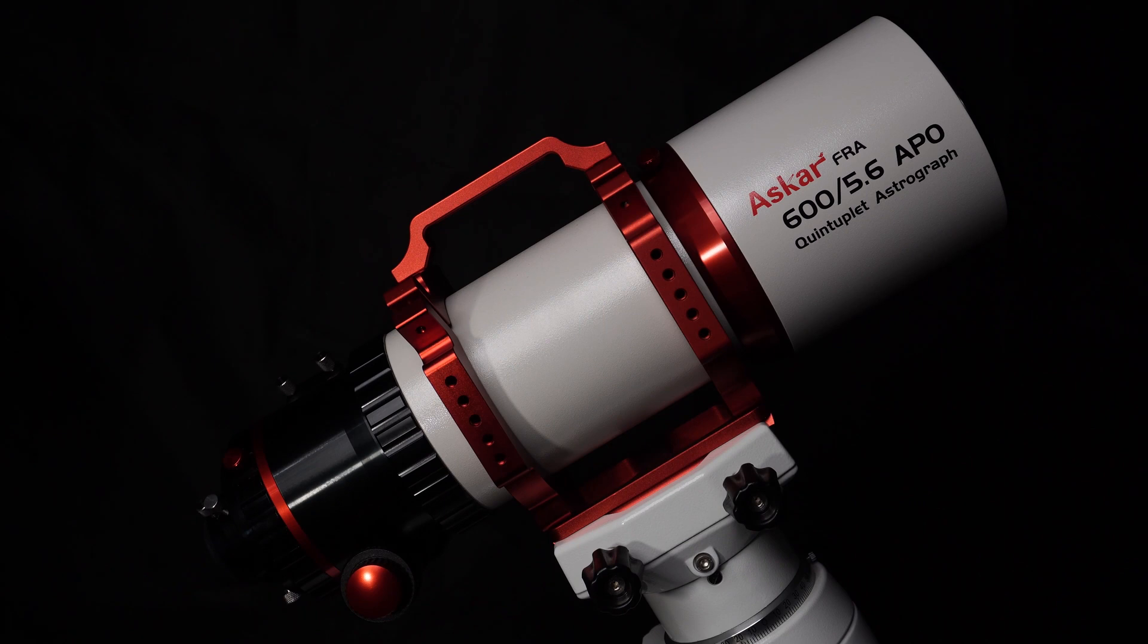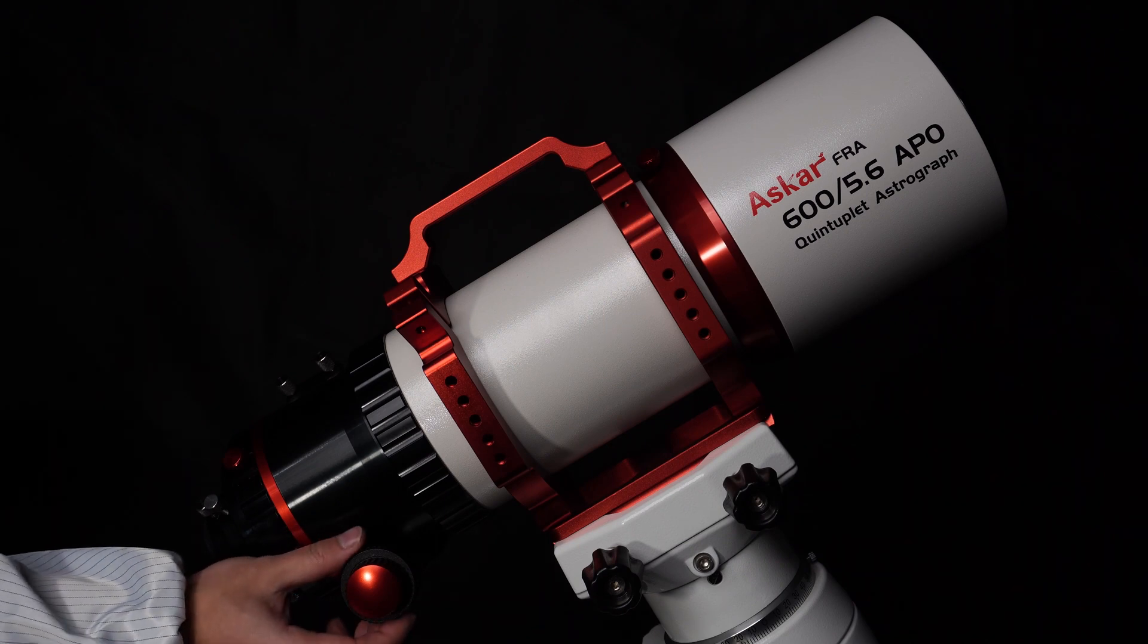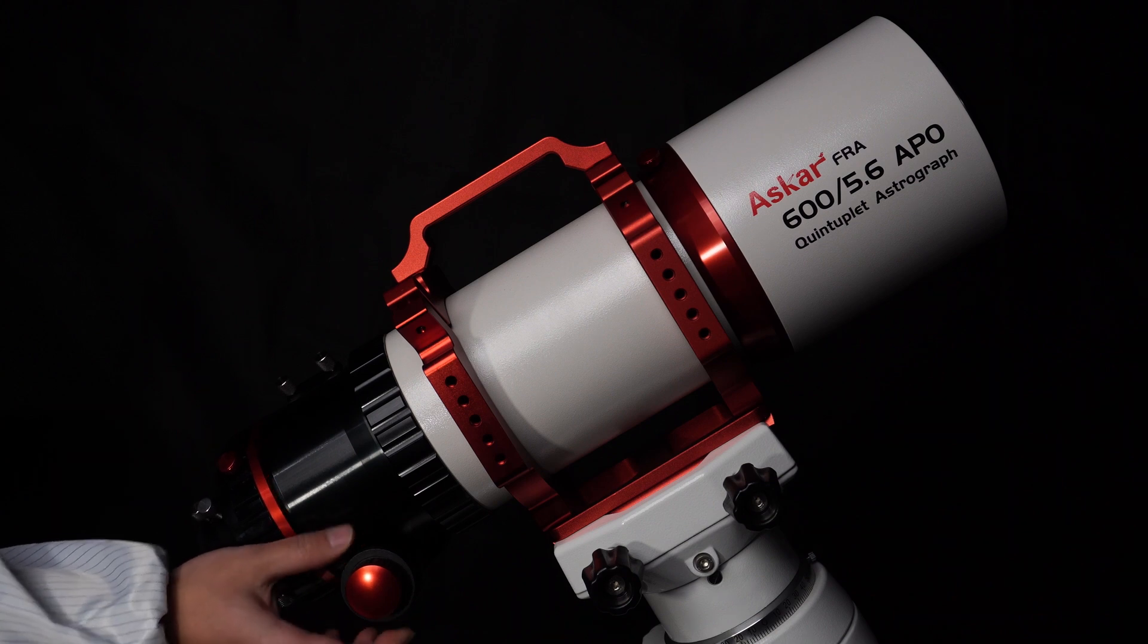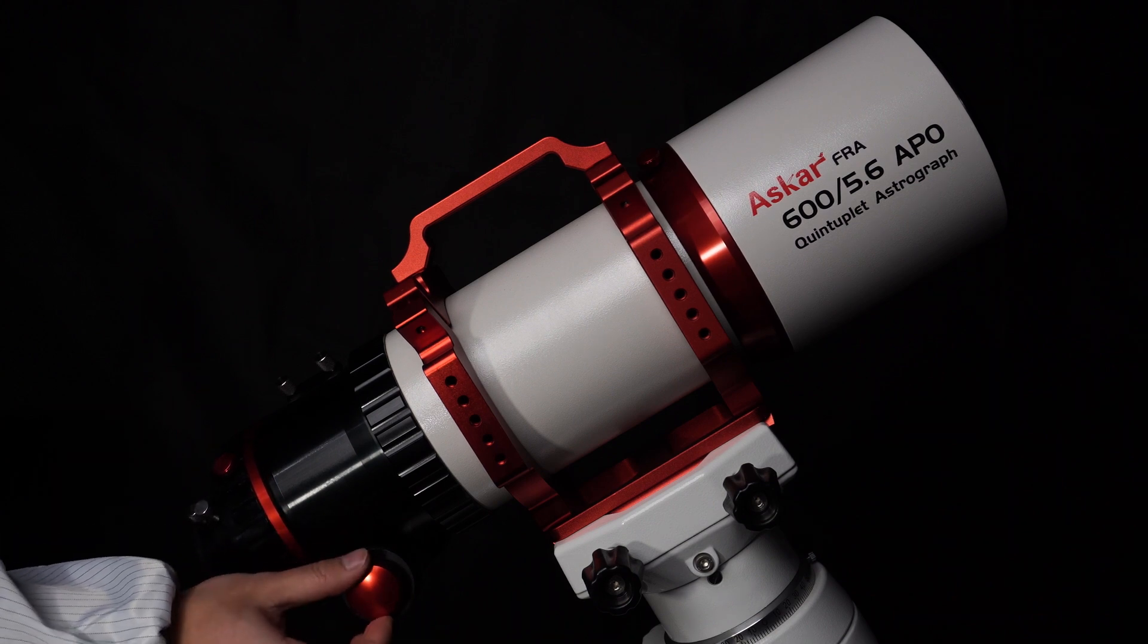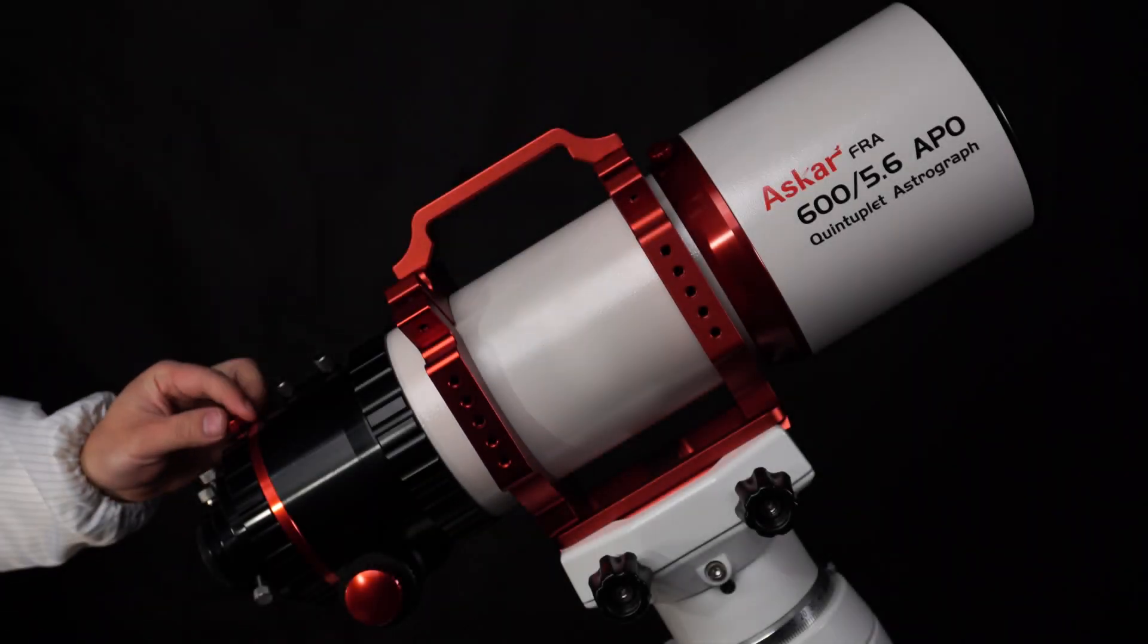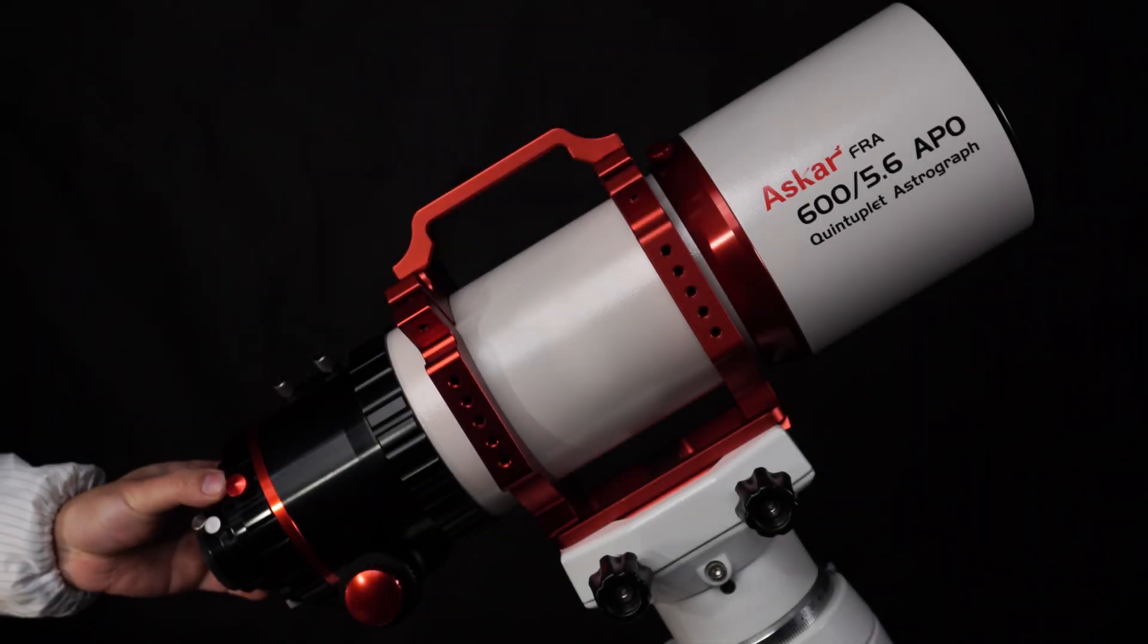The astrograph offers both fine and coarse adjusting knobs on the focuser. The 1-to-10 adjusting system makes your adjustment more precise and convenient. The rotator can make a 360-degree turn.